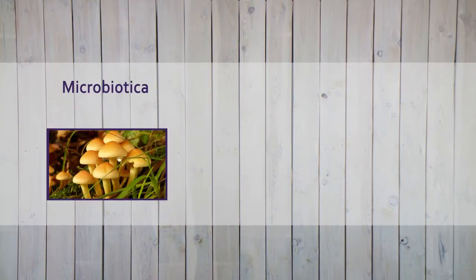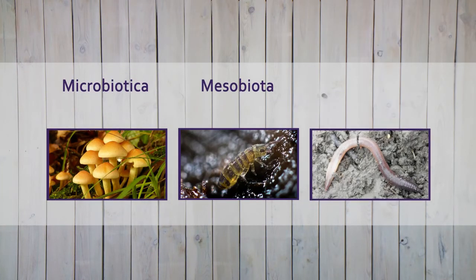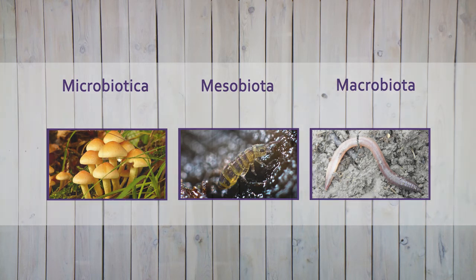Soil-living organisms involved in this nutrient recycling can be considered as the organs of a digestive system. We can distinguish microbiota, mesobiota and macrobiota. A natural system doesn't need human help to maintain. Regardless of some natural losses, the nutrient cycle is closed — nothing is removed and nothing has to be added.